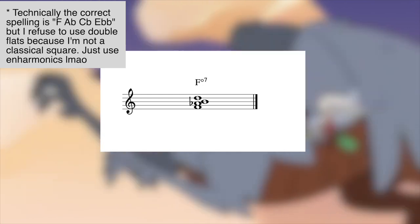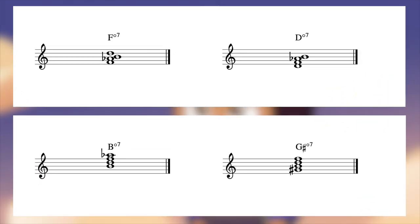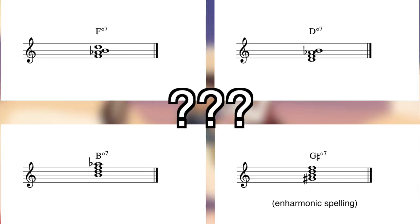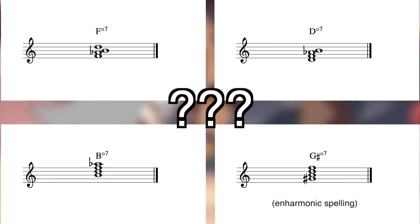Diminished 7 chords are symmetrical, meaning no matter which way you stack it, it's still a diminished 7, but under a different root. So most of the time, the way we figure out which of the 4 possible chords it is, is either by looking at the root or the chords surrounding it in the context.